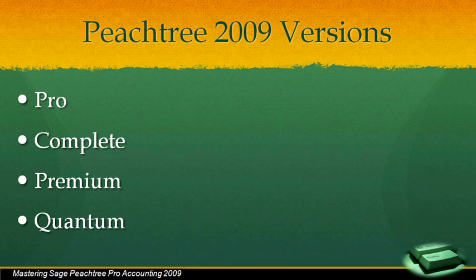In versions like Premium and Quantum, you do receive a little bit extra. For example, you get more standard reports than you do in just the Pro version. The main difference found in the Premium and Quantum versions is the ability to do planning, budgeting, and working with things like serialized inventory. For a complete overview of what everything offers and which one is best for you, you probably want to go to the website.